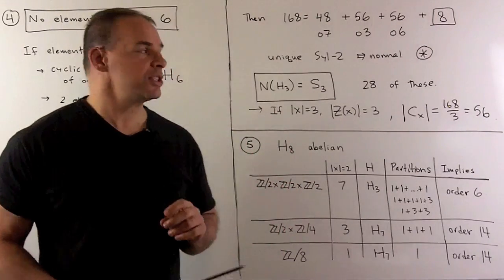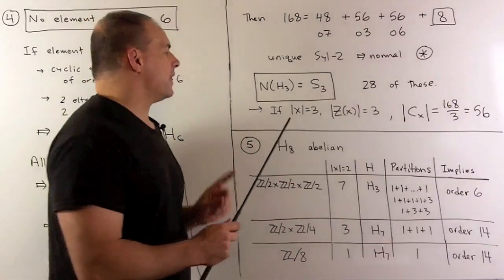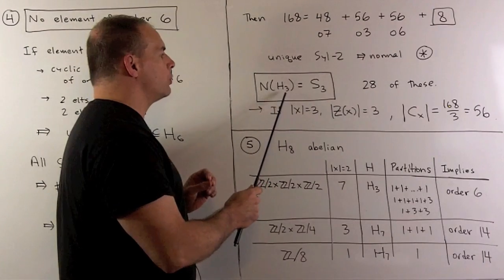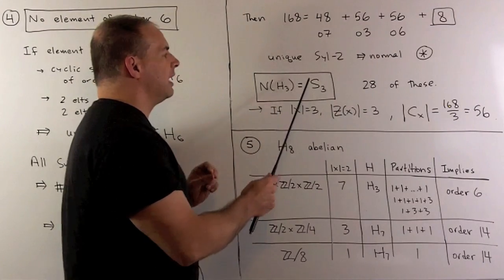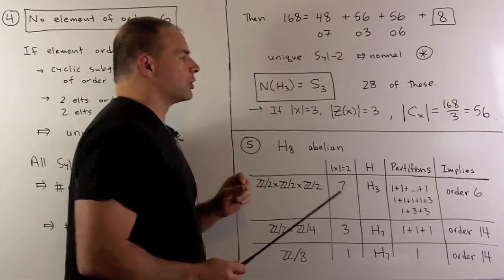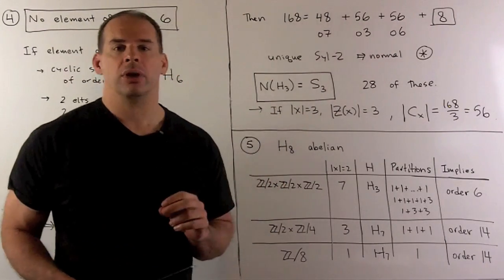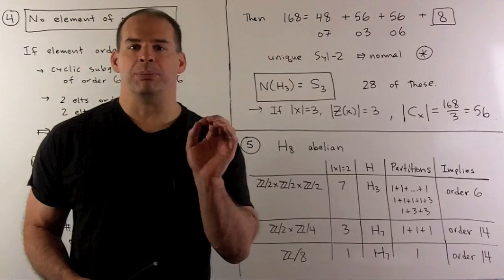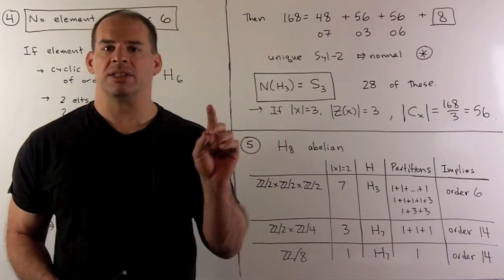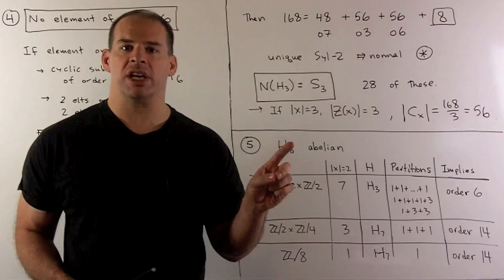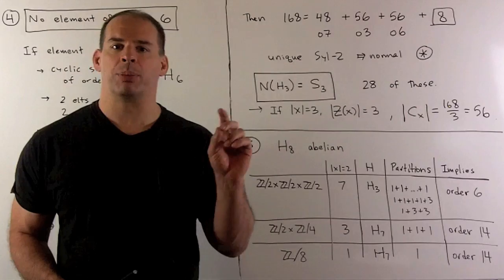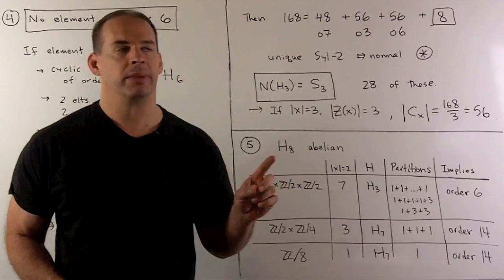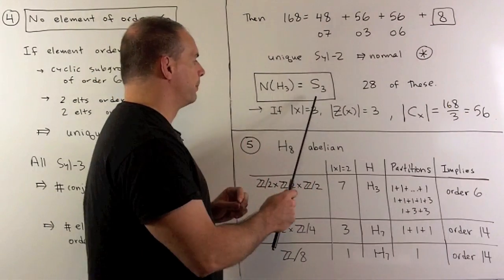First consequence: that means the normalizer of our Sylow 3-subgroups is going to be the symmetric group on three letters. If I have a subgroup of order six, it's not abelian — it's not cyclic of order six — it's a permutation group on three letters.